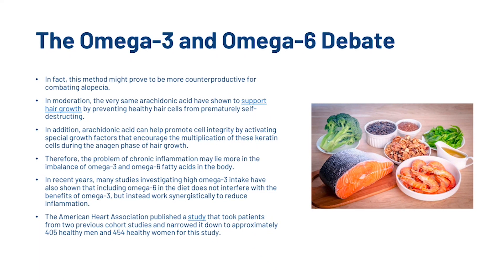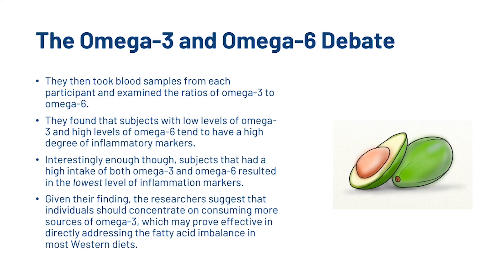The American Heart Association published a study examining blood samples from approximately 405 healthy men and 454 healthy women drawn from two previous cohort studies. They examined the ratios of omega-3 to omega-6 and found that subjects with low omega-3 and high omega-6 tended to have high degrees of inflammatory markers. Interestingly, subjects with high intake of both omega-3 and omega-6 had the lowest levels of inflammation markers. The researchers suggest individuals should concentrate on consuming more omega-3 to address the fatty acid imbalance in most western diets.